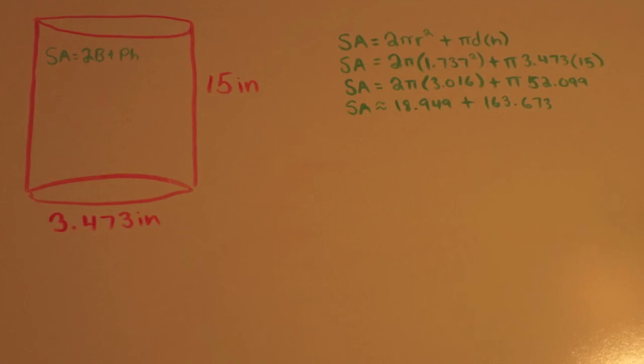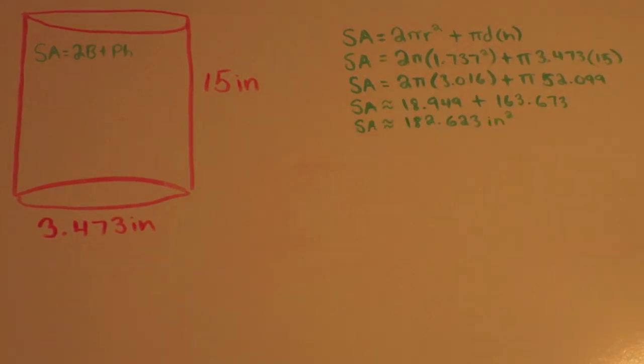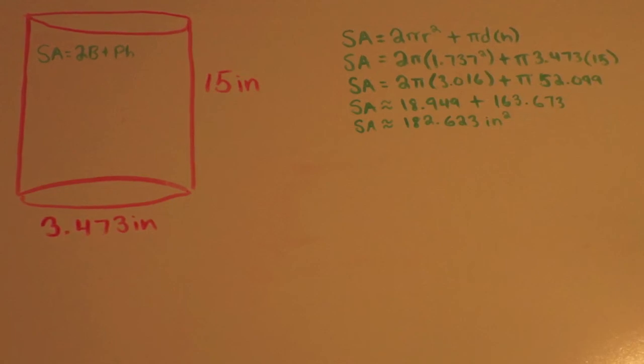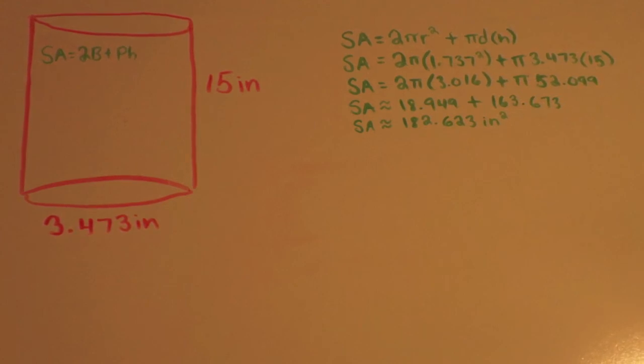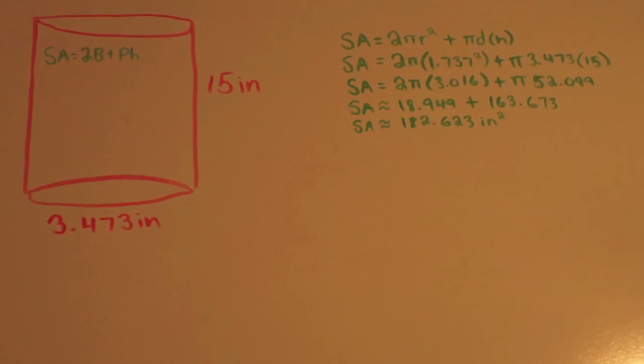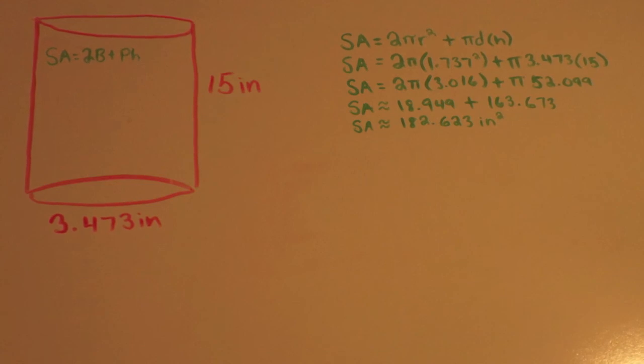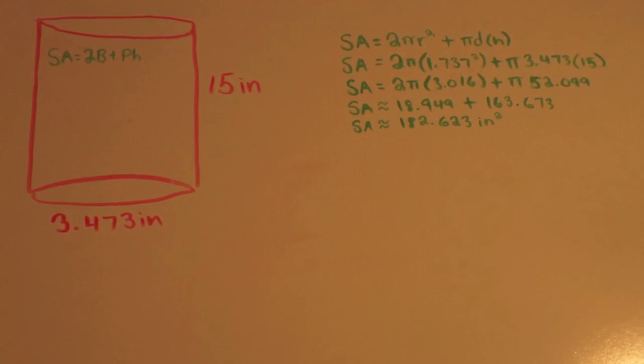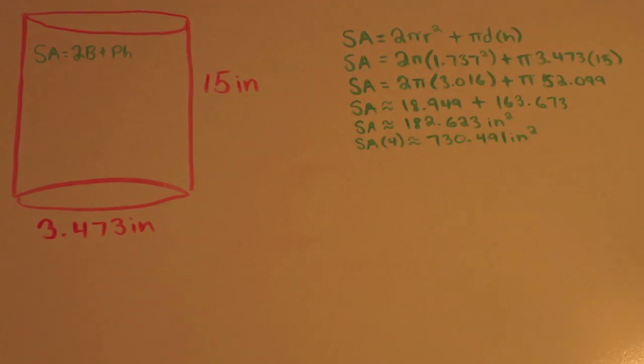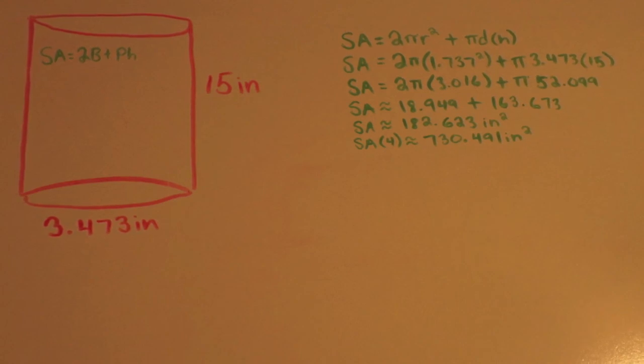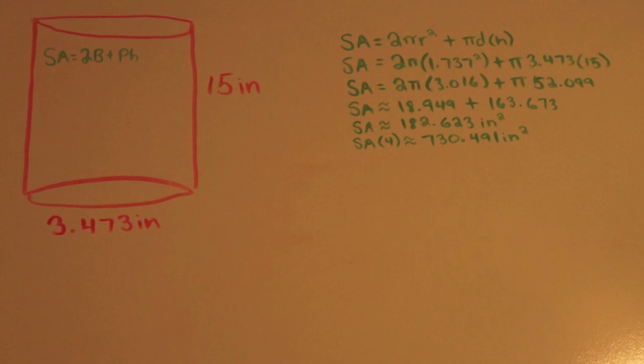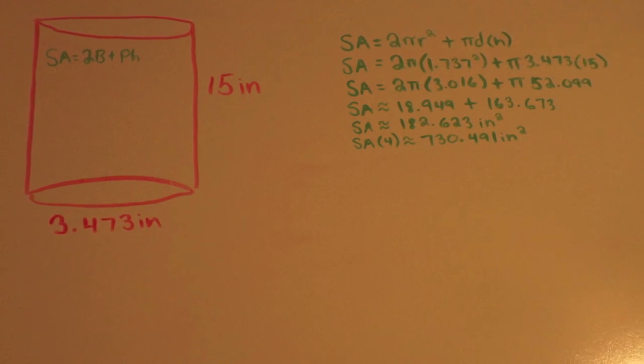When I add the two numbers together, I get that the surface area of the cylinder is approximately 182.623 inches squared. I had to pay attention and add not multiply, at this point if the client wanted to only cover the sides with paper mache then she would calculate the area of the base times 2, and subtract that from the overall surface area. The client wants to cover the figure with 4 layers so I multiplied 182.623 times 4 and got approximately 730.491 inches squared.